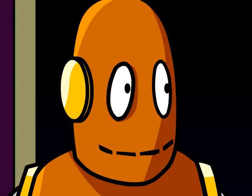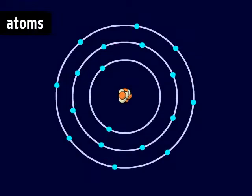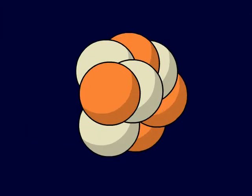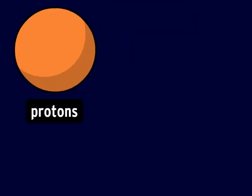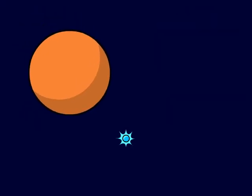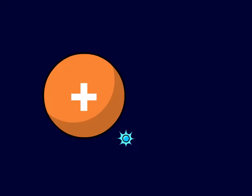Where do objects get an electrical charge? Well, everything in the universe is made of tiny little particles called atoms. Atoms are made of protons, neutrons, and electrons. Protons and electrons have an electrical charge, while neutrons don't. Protons have a positive electrical charge. Electrons have a negative electrical charge.